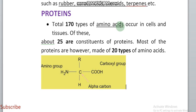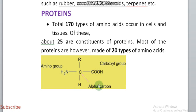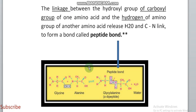For proteins: 170 types of amino acids occur in cells and tissues, but only 25 constitute proteins. Out of these 25, most proteins are made up of 20 types of amino acids. Do not confuse 25 and 20 — 25 amino acids produce proteins, and 20 are the most important ones. This is the general formula for all amino acids. When two amino acids combine, they form a peptide bond — for example, glycine and alanine combine to form a peptide bond.